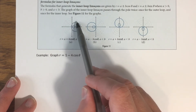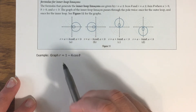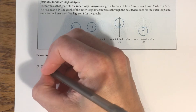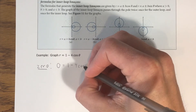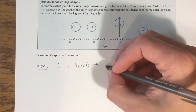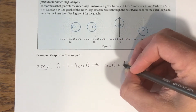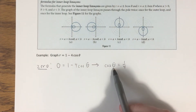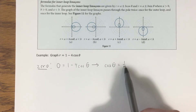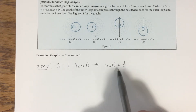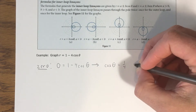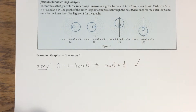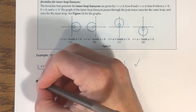These inner-loop limaçons do contain the pole — that's where the graph crosses itself to create the smaller loop. To verify, set r = 0: 0 = 1 - 4cos(θ), which gives cos(θ) = 1/4. That's not a familiar value, but what matters is that 1/4 is between -1 and 1, so a solution exists. That confirms it passes through the pole.